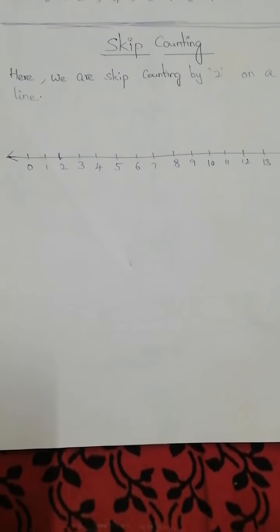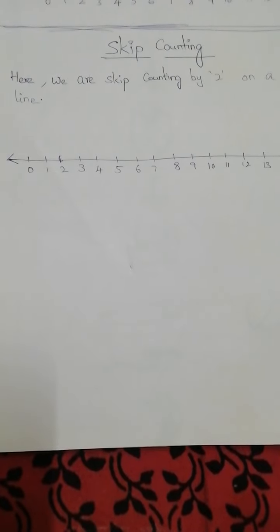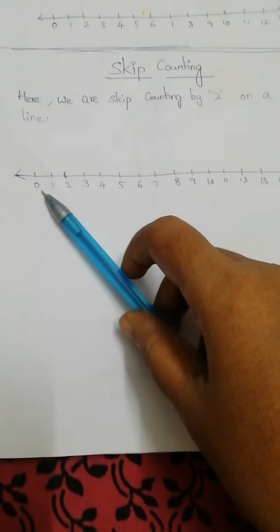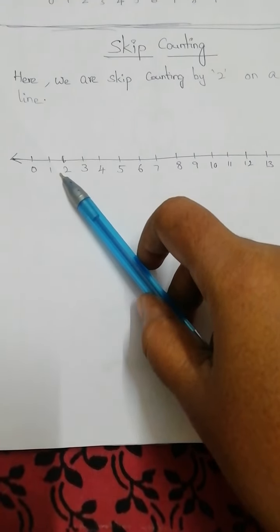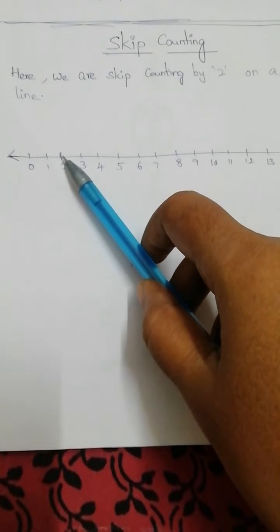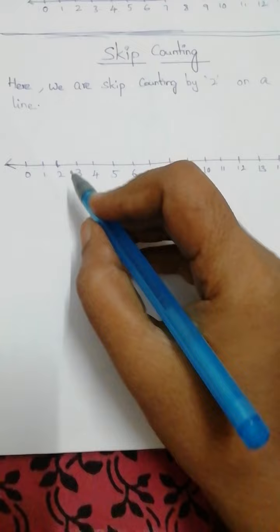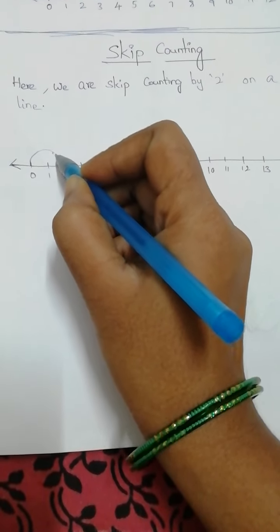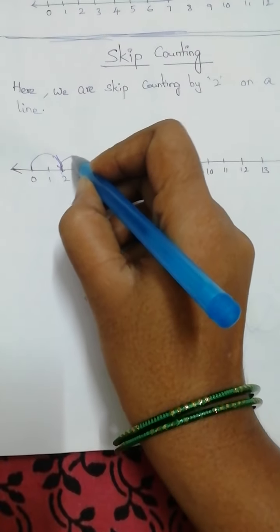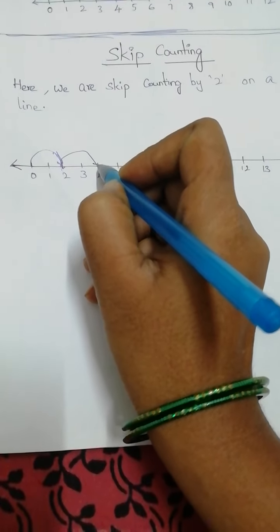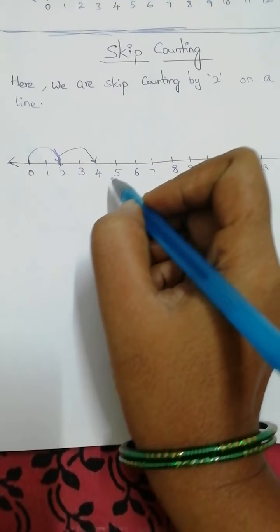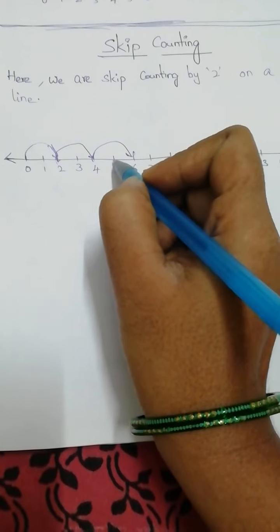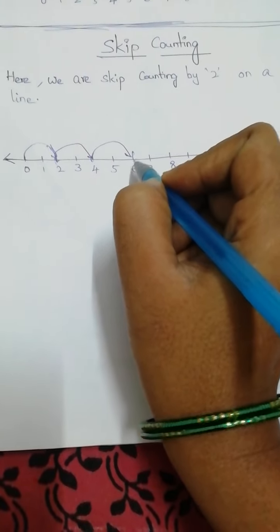For example, if I say skip counting by two, it means start with zero and add two. So the first number will be two. Zero plus two gives us two, then four. Two plus two is four. Then skip count by two means four plus two - we skip these two numbers - then six.